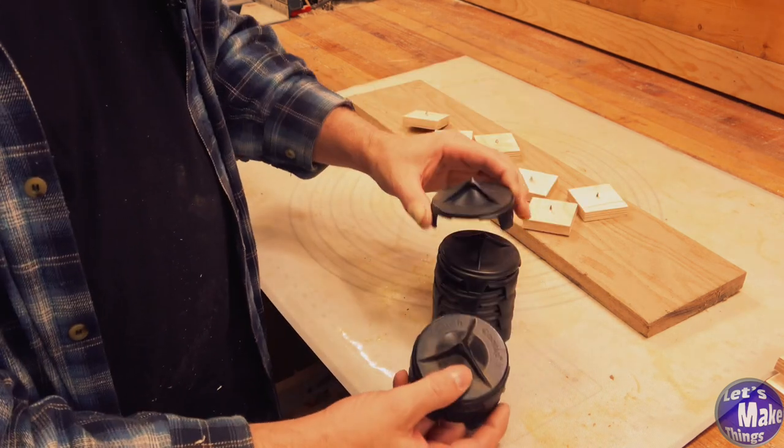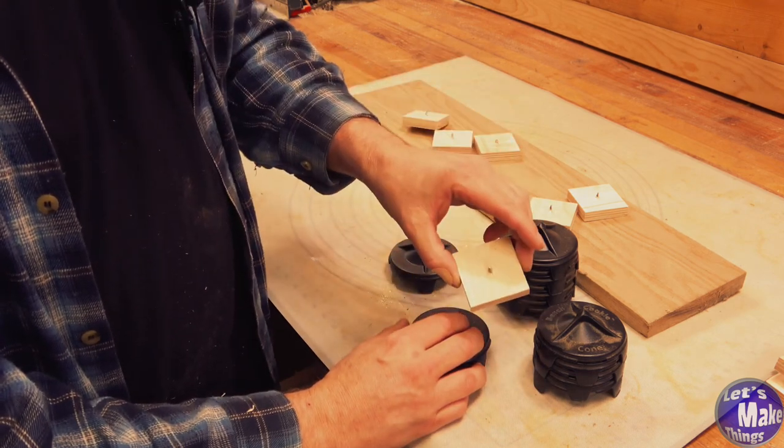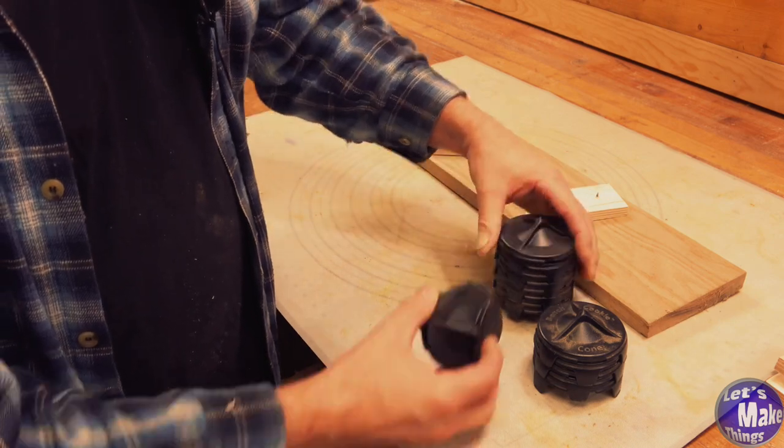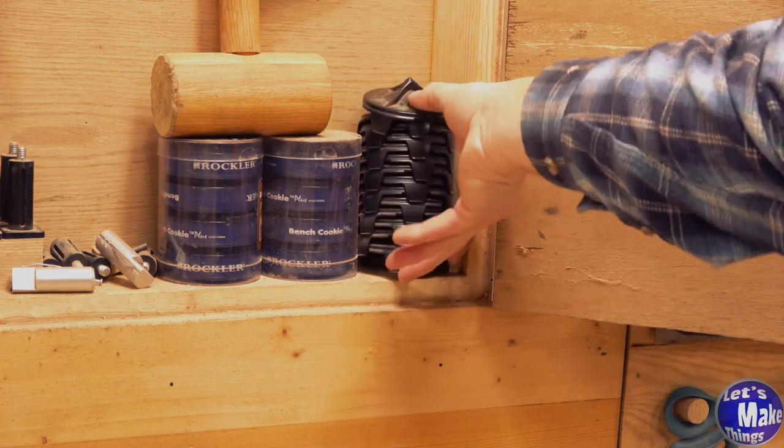Now, you can buy these cones. They'll lift your work off the surface. Once again, they've got the point on it, just like the blocks that we made. But what I like about these is that they nest. They're just so easy to store inside my cabinet.